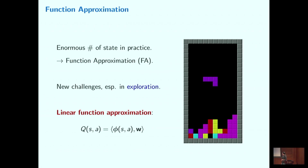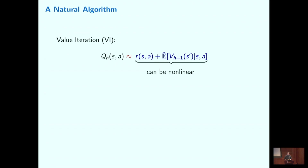By linear function approximation we mean we parameterize our Q-value as something linear in a feature map of state-action pair (s, a) and some unknown weight vector w. It turns out in practice people usually use linear function approximation and it works reasonably well. There's a classical algorithm called least squares value iteration.